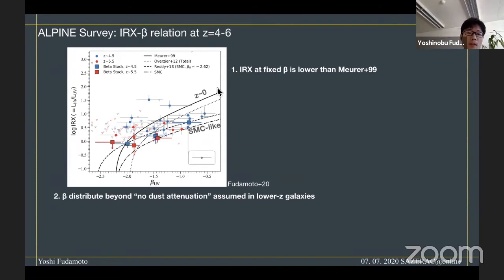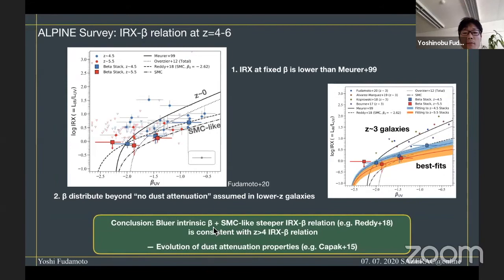Compared to the local IRX-beta relationship, another thing is that the galaxy distribution of beta apparently is much bluer than the intrinsic UV spectral slope measured or expected from the local universe. Our conclusion here is that these galaxies can be characterized by a bluer intrinsic beta characterized by minus 2.63, and these galaxies are consistent with very steep dust attenuation curves similar to SMC-like dust extinction. Compared to the lower-redshift galaxies, these galaxies show a very deficit of IRX values, and these are consistent with the previously found evolution of dust attenuation properties.